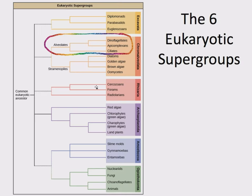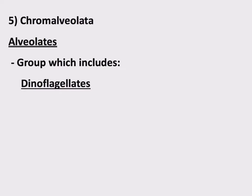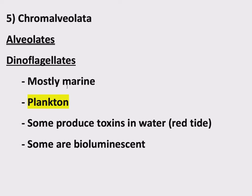I find this to be perhaps a useful visual if you're trying to take in some of this information: dinoflagellates are alveolates, they're also Chromalveolata, they're also eukaryotes — whatever you need to look at to make this click with your brain. So what are dinoflagellates? Dinoflagellates are mostly marine, meaning they live in salt water. They're plankton.